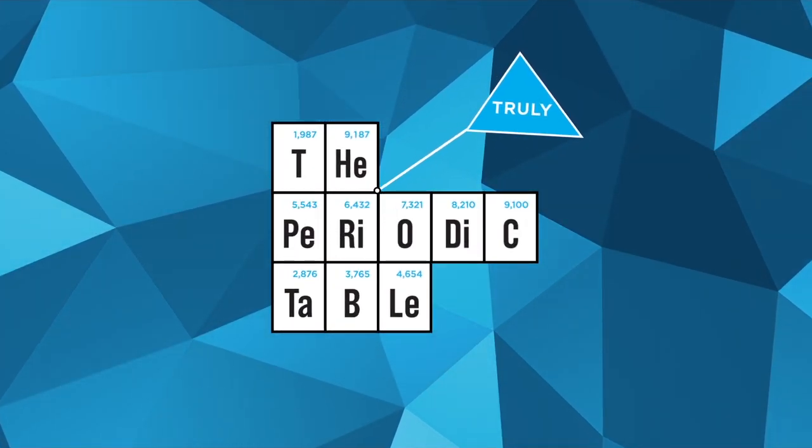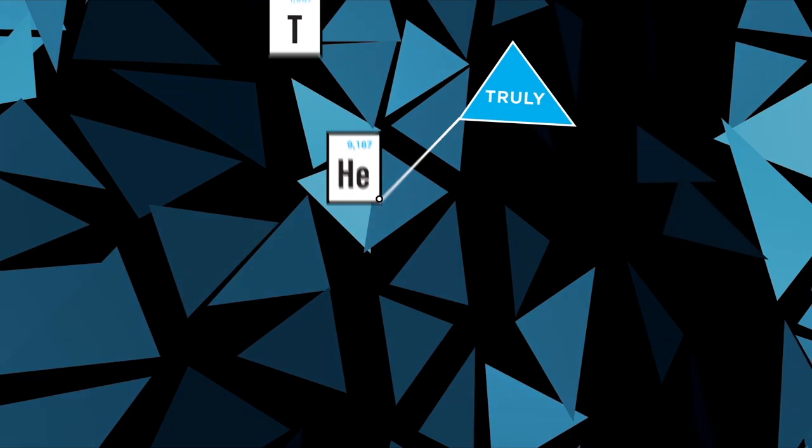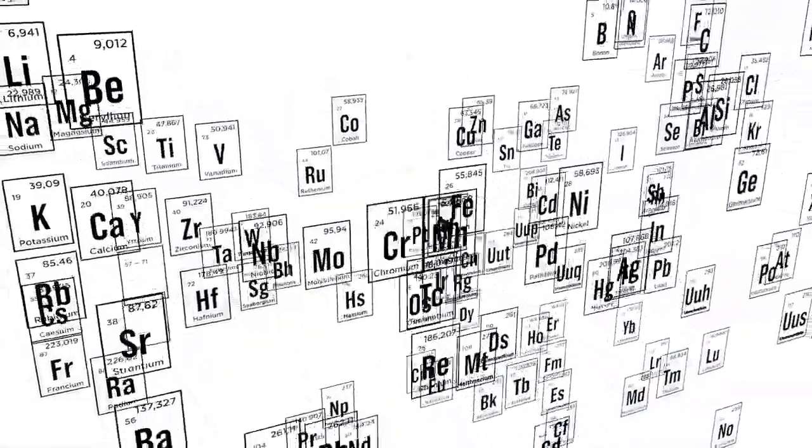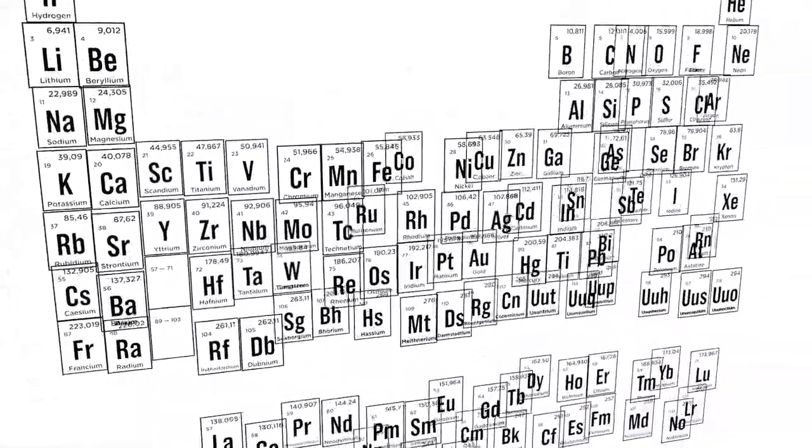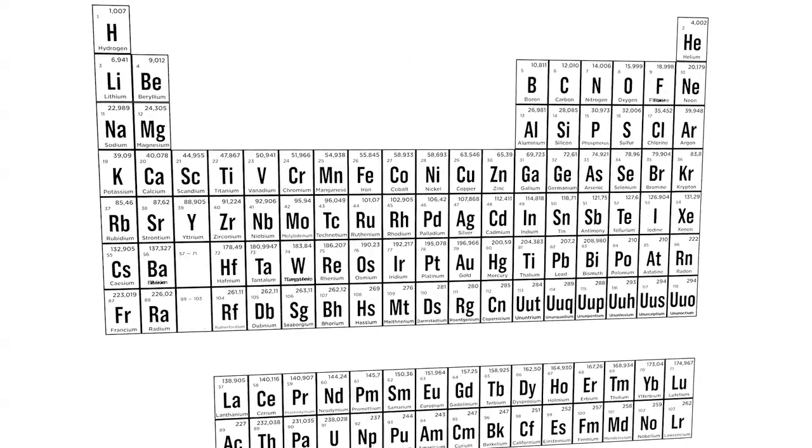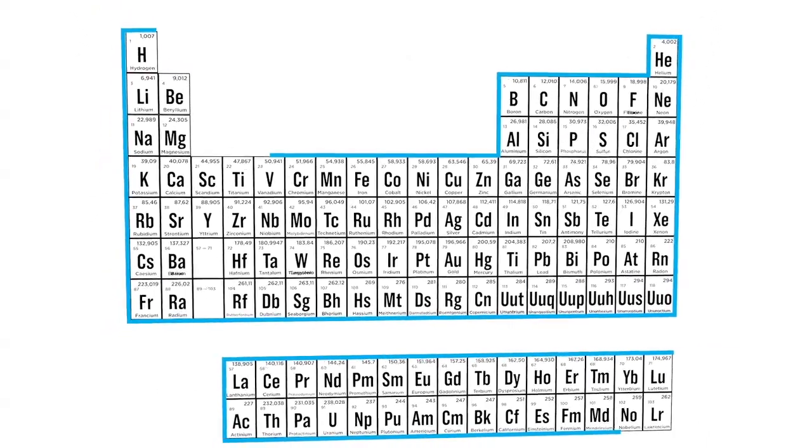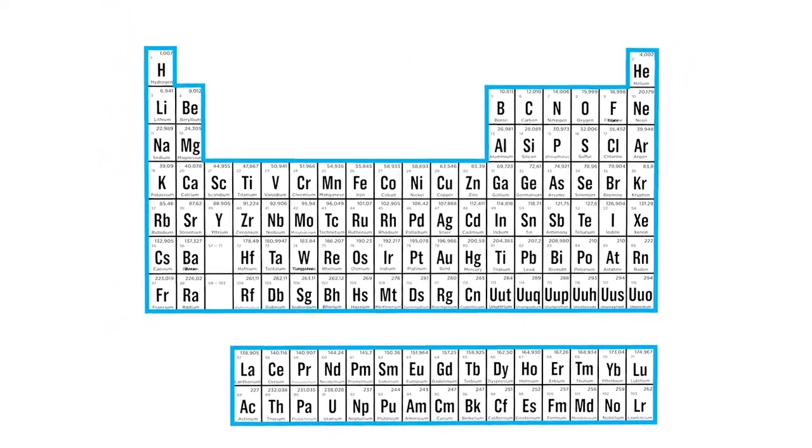The truly periodic table. The periodic table is this chart with a strange shape, with letters and numbers, neither a square nor a rectangle, with such a characteristic shape. Unmistakable!